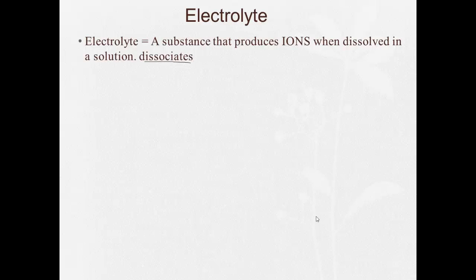So when we take salt and put it into water, the sodium breaks apart into Na+. The chloride breaks apart into Cl-. That breaking apart of the ionic bond is called dissociation. So anything that dissociates, produces these ions in water, is said to be an electrolyte.